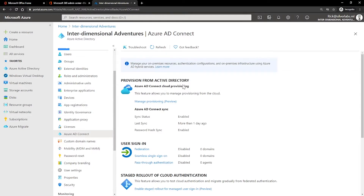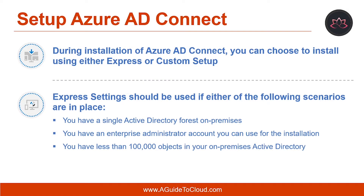During installation of Azure AD Connect, you can choose to install it either on an Express or Custom Setup. Express Setup is the most common option and is used by 90% of all installations. It was designed to provide a configuration that works for most common customer scenarios. It assumes that you have a single Active Directory forest on-premises, an Enterprise Administrative Account for the installation, and less than 100,000 objects in your on-premises Active Directory. With the Express setting, you will get password hash synchronization, a configuration that synchronizes users, groups, contacts and Windows 10 computers, and automatic upgrade is enabled.